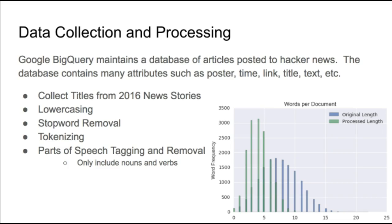The graph on the right shows the distribution of the number of words per title pre and post processing. The blue distribution represents title lengths prior to processing and the green represents after, and we can see that we shrunk down the length of all the titles quite significantly.